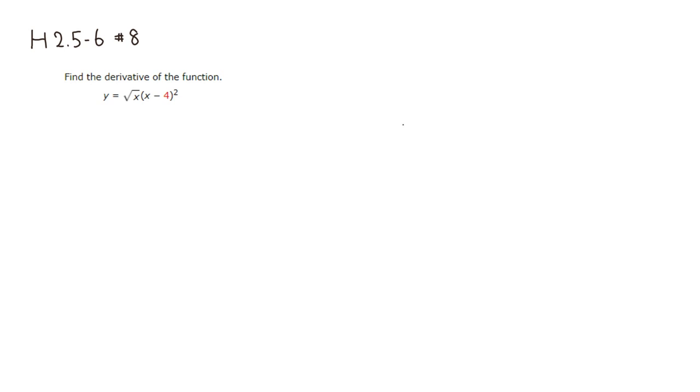First thing I would do is I'm going to rewrite the square root as x to the 1 half power. And the rest of it looks okay. So I'm going to just say quantity x minus 4 squared.